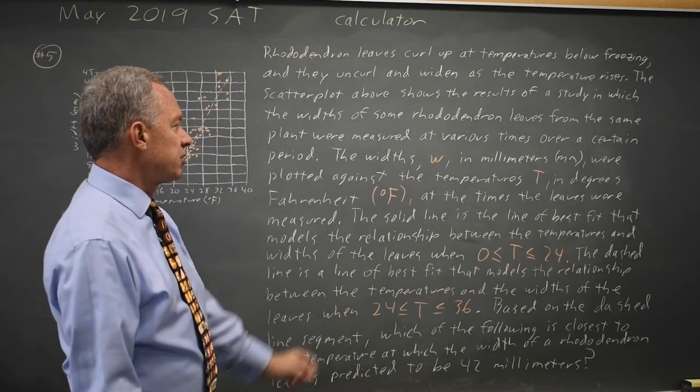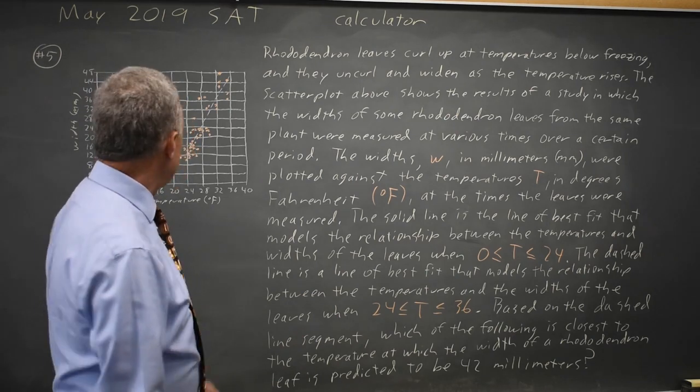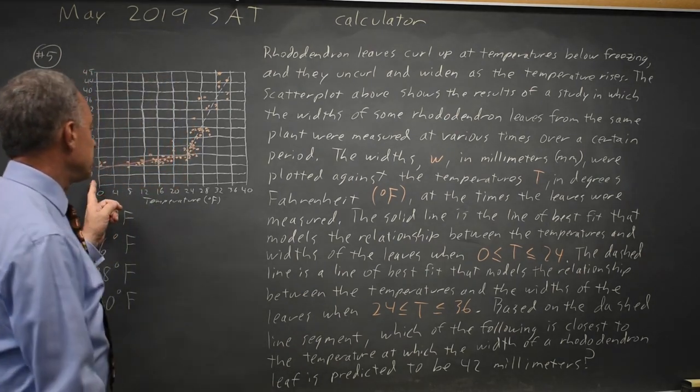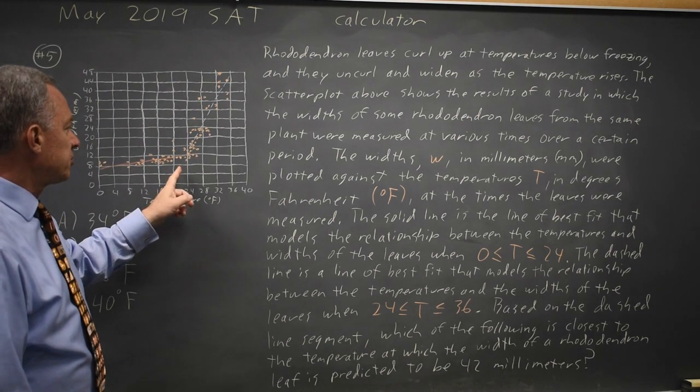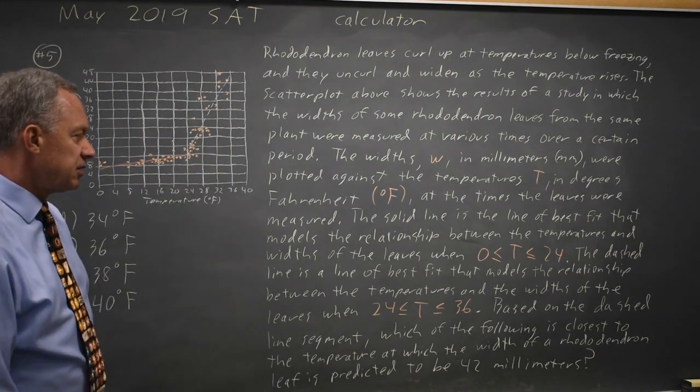It gives us a long paragraph describing what's going on, and we have two lines of best fit: one from temperatures of zero to 24, and one from temperature of 24 to 36 degrees Fahrenheit.